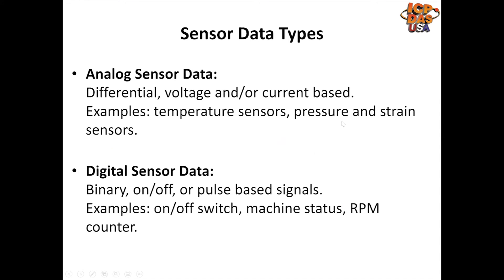The next thing you need to understand are sensor input data types. There are two major kinds of sensor data that any DAQ system collects: analog and digital. Analog data is differential — it's volt and current based. Analog data tends to come from sources like a thermistor, where the current changes in relation to the temperature. A thermistor is a type of temperature sensor that works using a thermal resistor. In the most common thermistors, called NTCs or negative temperature coefficient thermistors, resistance goes down as temperature goes up, so the current output increases in correlation with the increase in temperature.